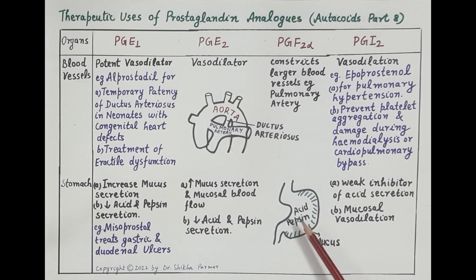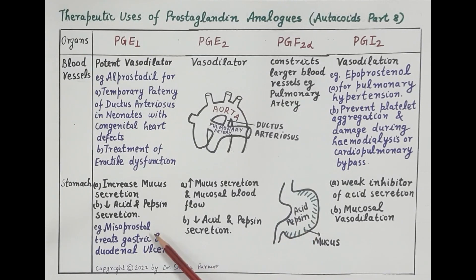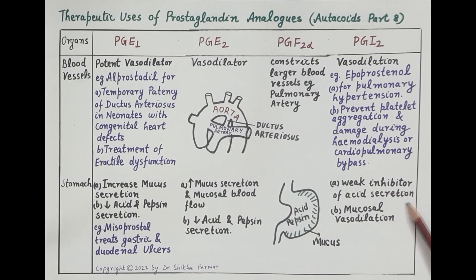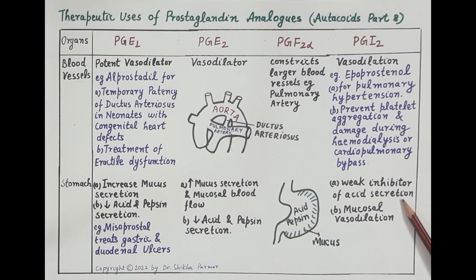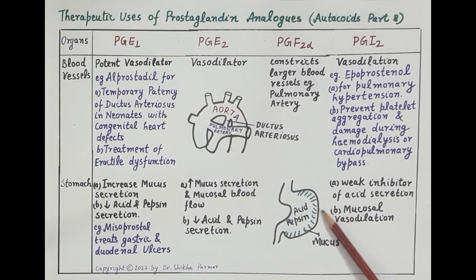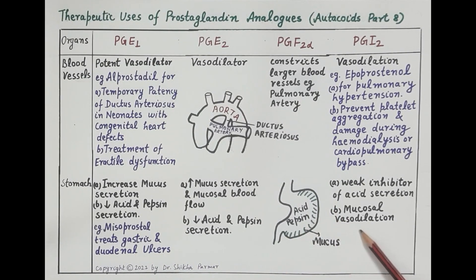Misoprostol is a synthetic analog of prostaglandin E1 and is occasionally used for treatment of gastric and duodenal ulcers. Prostacyclin (PGI2) is a weak inhibitor of acid secretion and also produces mucosal vasodilation — dilation of blood vessels supplying the gastroduodenal mucosa — and therefore exhibits a weak anti-ulcer effect.